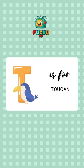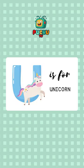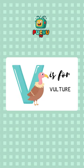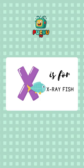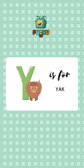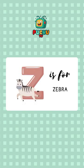T is for toucan, U is for unicorn, V is for vulture, W is for wolf, X is for x-ray fish, Y is for yak, Z is for zebra.